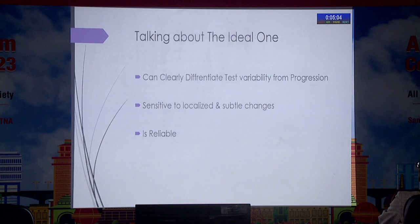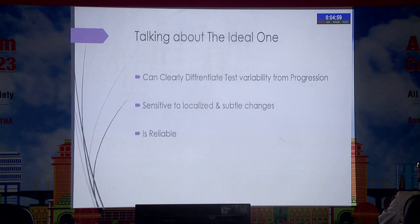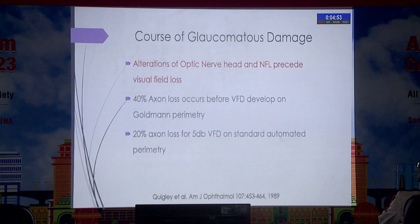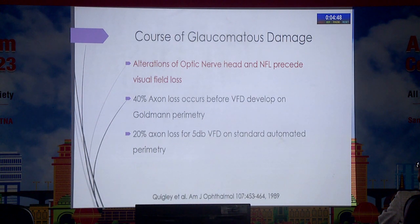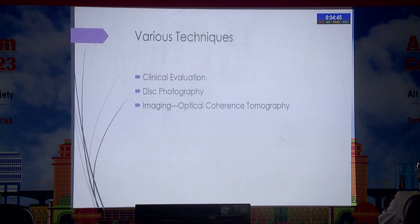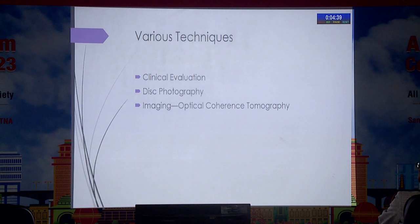The ideal test is one that can clearly differentiate between test variability and true progression, and is sensitive enough to localize subtle changes. In glaucoma, the first thing to be damaged is the RNFL and the optic disc, and visual field defects come last. Today we are going to talk about OCT imaging for detecting progression.